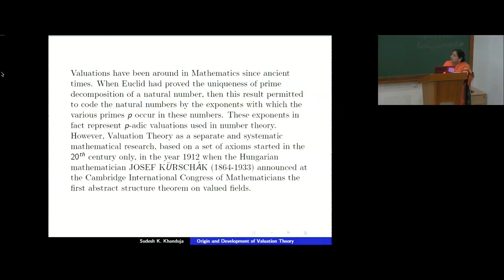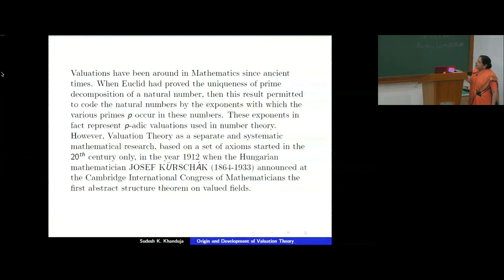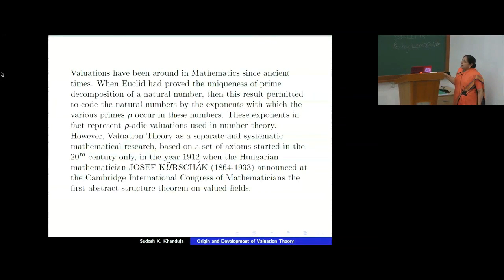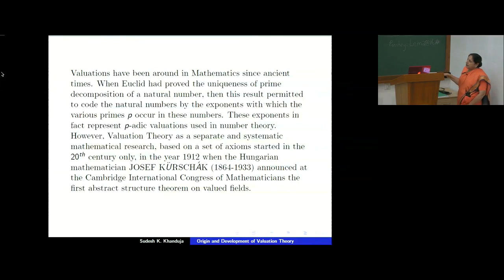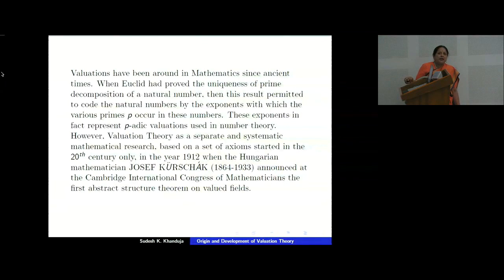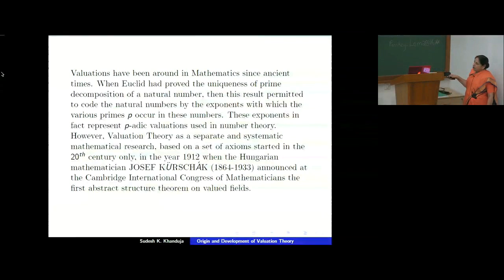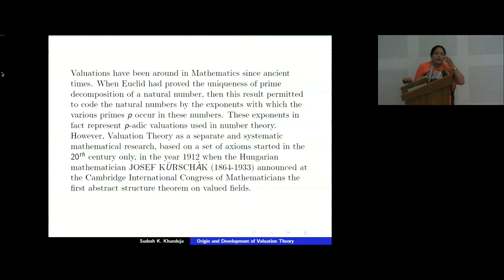Evaluations have been around in mathematics since ancient times. When Euclid proved the uniqueness of prime decomposition for natural numbers about 300 years before Christ, this result permitted him to code the natural numbers by the exponents with which the various primes divide these numbers. These exponents occurring in the factorization of a natural number represent periodic valuations used in number theory. Valuation theory as a separate systematic mathematical research based on axioms started in the 20th century, in 1912, when the Hungarian mathematician Joseph Kurschák announced at the International Congress of Mathematicians in Cambridge the first abstract structure theorem on valued fields. The paper, written in German, appeared one year later in Crelle's journal.